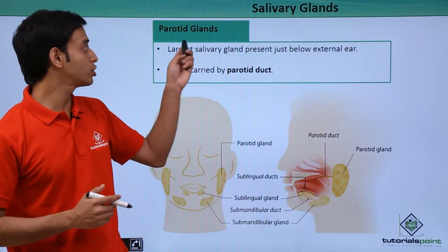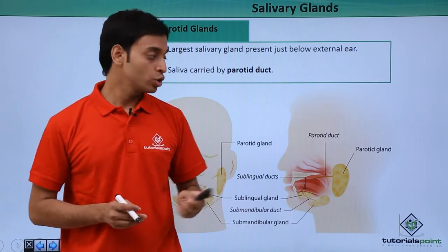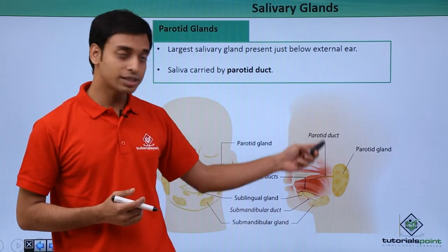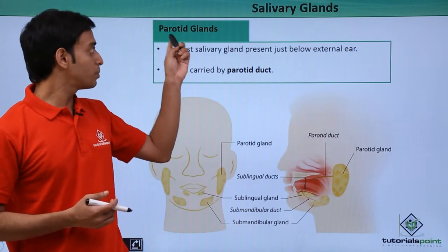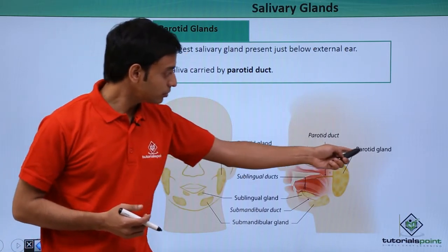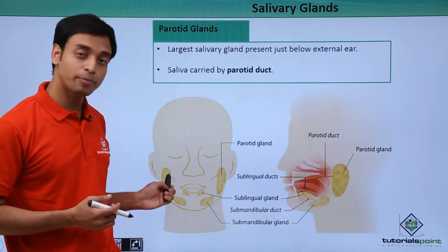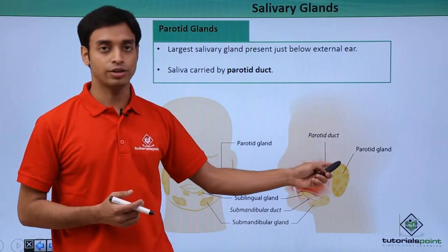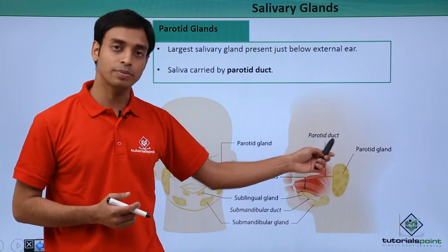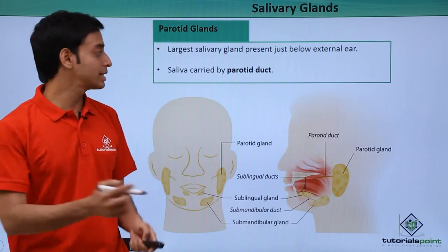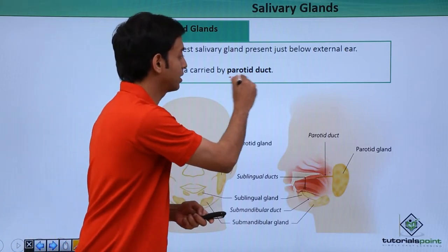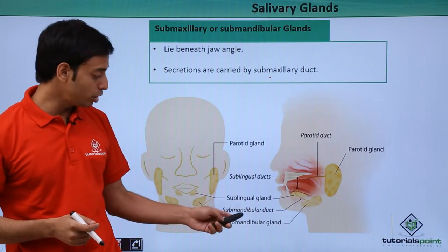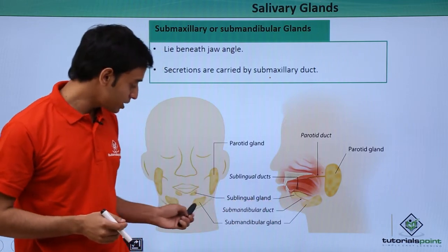The first type of salivary gland is known as the parotid gland. We have shown a picture in two forms — a sideways view and a front view. The parotid glands are the largest glands, present just below the external ear, as you can understand from the picture. The saliva from the parotid gland is carried by the parotid duct into the buccal cavity.